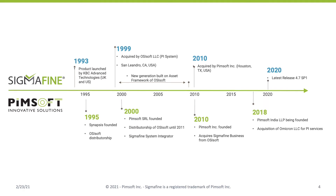If you don't know Sigma Fine or PIMSOFT, let me give you a brief overview. Sigma Fine is our product. It was first launched in 1993 by KBC, then acquired by OSISoft in 1999 — the era when the asset framework technology was designed. Sigma Fine was one of the first products built on AF technology. In 2010, PIMSOFT, a top-tier partner of OSISoft, bought Sigma Fine. PIMSOFT itself started in 1995 and continues to grow and expand.